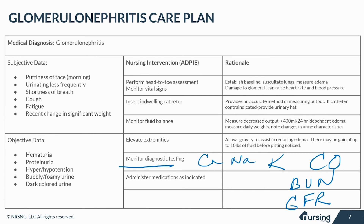Sometimes glomerulonephritis will clear on its own, so it's important to know that. Depending on the severity of the symptoms and progression of disease, diuretics are often given to remove excess fluid. Anti-hypertensives to manage blood pressure caused by fluid retention, and electrolyte supplements like potassium and calcium to maintain homeostasis.